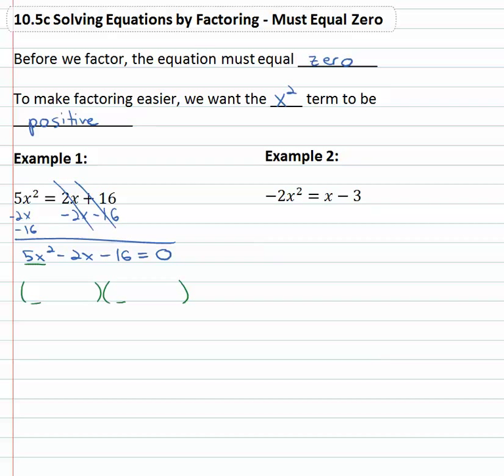First times first equals first, the only way to get 5x² is 5x times x. Last times last equals last. Sixteen might be four times four. Let's see if that works, just checking it real quick.